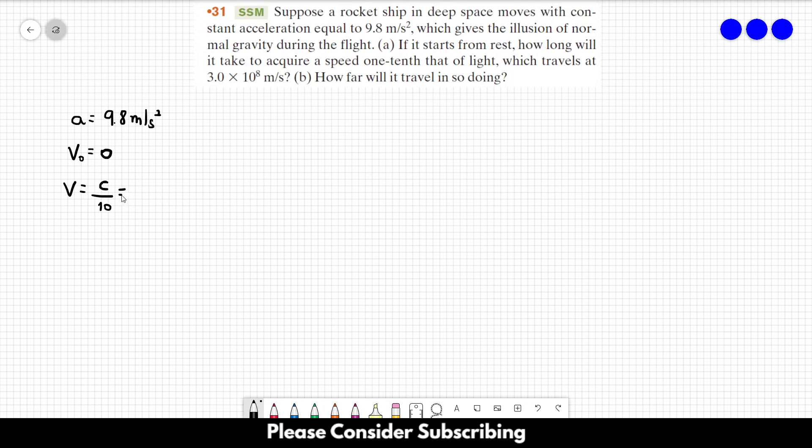The speed of light is 3 times 10 to the 8. So we divide it by 10 and get 3 times 10 to the 7 meters per second. So this is the final speed. In part A we want to know the time it took to accelerate to one-tenth of the speed of light.